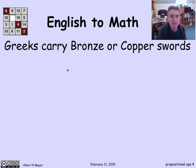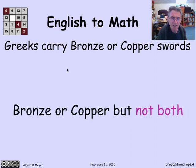Let's look at another example. Greeks carry bronze or copper swords. Syntactically, this has the same structure as the previous phrase, but we're going to translate it differently. The reason is that a Greek soldier is not going to carry both a bronze and a copper sword.